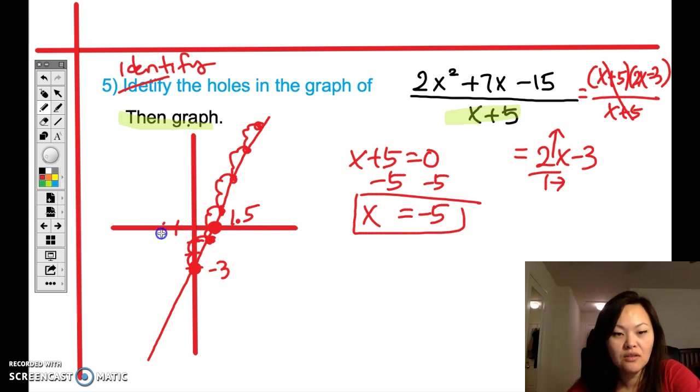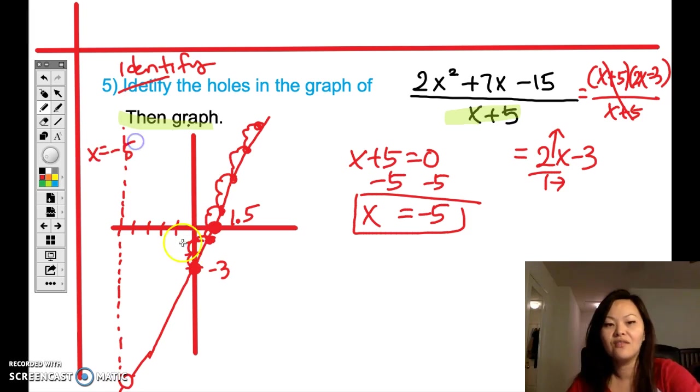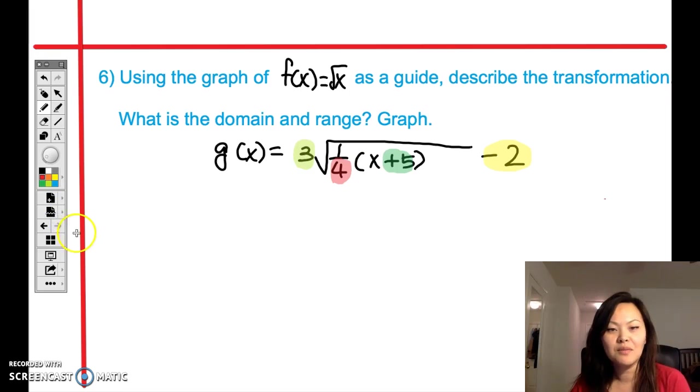Finally, we need to make the hole. The hole is that x is equal to negative 5. So find 1, 2, 3, 4, 5, find out where negative 5 is, then go ahead and draw a dotted line. Because that's your vertical asymptote, and make sure that right there you draw a big hole because that's where the hole is supposed to be. That's all you have to do. And don't forget to write the vertical asymptote x equals negative 5. That's it for number 5, easy.